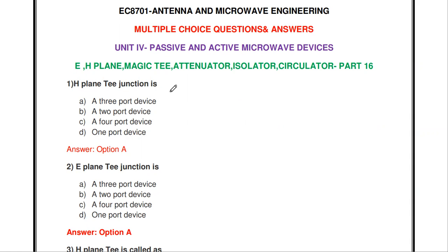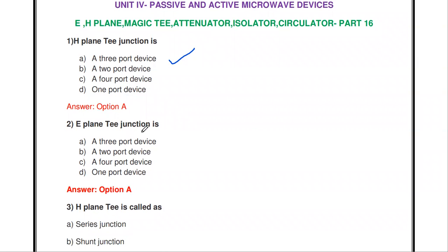The first question: the H-plane T-junction is — a three-port device, two-port device, four-port device, or one-port device? The H-plane T-junction is a three-port device. Both H-plane T and E-plane T are three-port devices, and magic T is a four-port device. Similarly, the E-plane T-junction is also a three-port device.